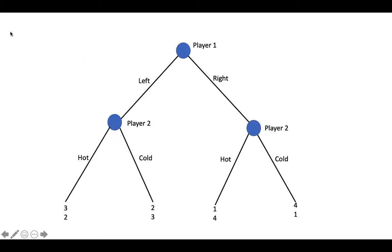In our previous video, we began to explore how to represent strategic interactions using extensive form games such as this one. In this game, player 1 moves first and can choose either left or right. Player 2 moves second and can choose either hot or cold. When player 2 chooses, they know whether player 1 has chosen left or right. The payoffs tell us that player 1 likes right cold the best, left hot second best, left cold third best, and right hot fourth best.